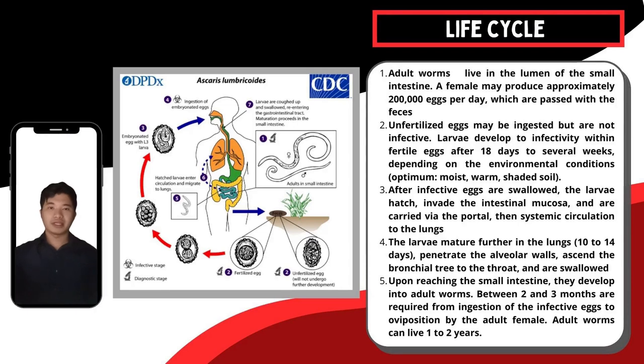In the life cycle of Ascaris lumbricoides, adult worms live in the lumen of the small intestine. A female may produce approximately 200,000 eggs per day, which are passed with the feces.